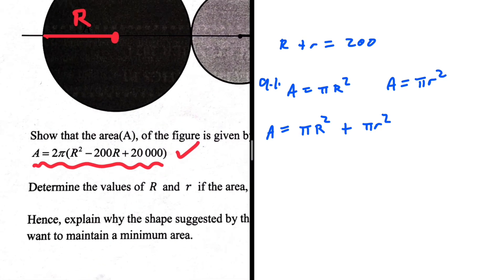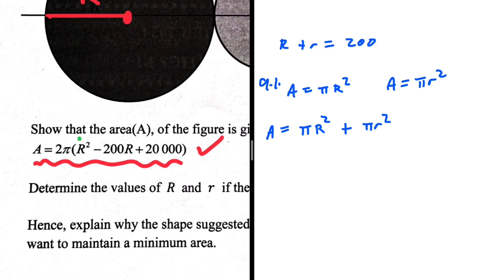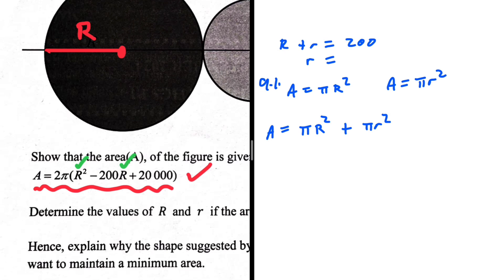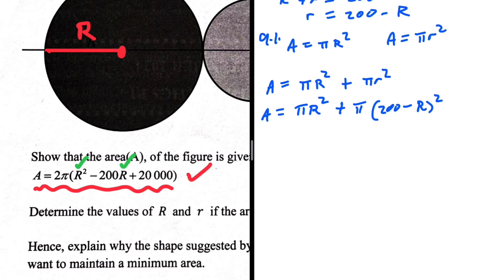That's a way we can start. But take a look — in the equation we are given, we don't have any small letter r, we only have capital R. So it would be wise to write small r in terms of capital R so that our equation has no small r. Making small r the subject of the formula, we get r equals 200 minus R. So our area will be equal to πR² plus π(200 minus R)².